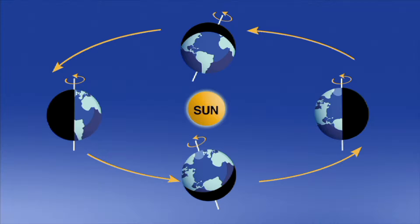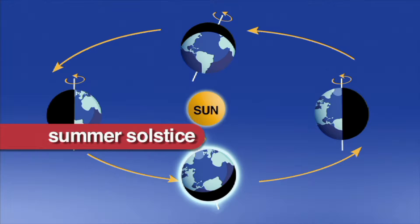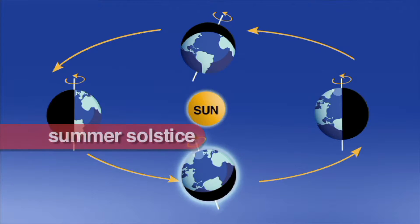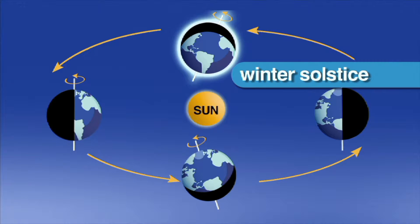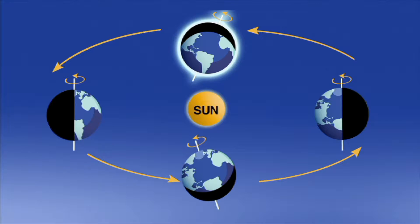The day that the Earth's North Pole is tilted closest to the Sun is called the summer solstice. The winter solstice, or the shortest day of the year, happens when the Earth's North Pole is tilted farthest away from the Sun.